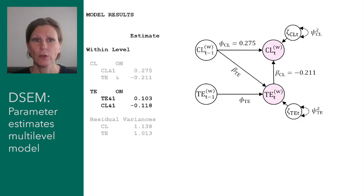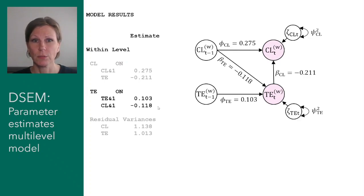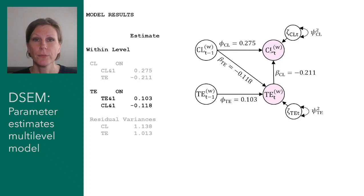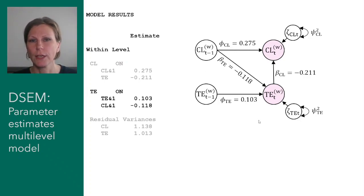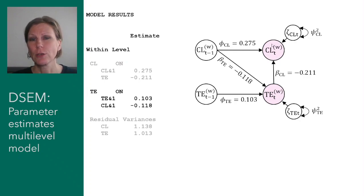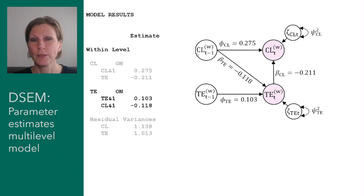Moving to the second part of the output — the 'on' statements, which are regressions and one-headed arrows in our path diagram — we see the auto-regressive and cross-lagged regressions. The auto-regressions are both positive: higher closeness yesterday carries over into today leading to higher closeness, and the same is true for tension. Looking at the cross-lagged regressions, when a person experienced more tension today they tend to feel less close to their spouse right now — a negative relationship.